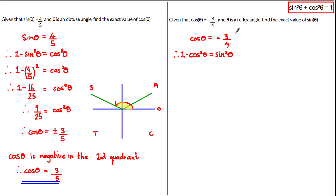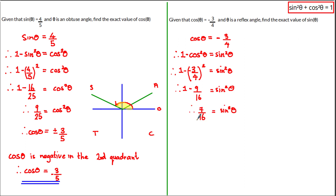We then substitute in the value for cos of theta to give us 1 minus (negative 3 over 4) all squared is equal to sine squared theta. Squaring the brackets on the left-hand side, we get 1 minus 9 over 16 is equal to sine squared theta. Doing 1 minus 9 over 16 gives us 7 over 16 is equal to sine squared theta. To get the exact values for sine of theta, we take the square root of both sides, giving us sine of theta is equal to plus or minus the square root of 7 over 4.